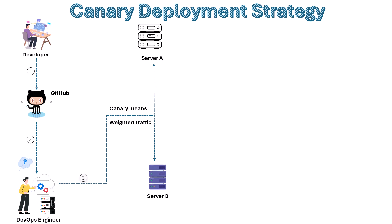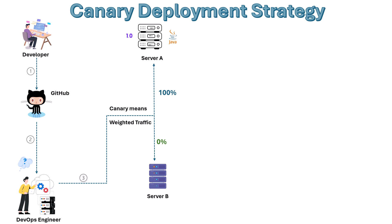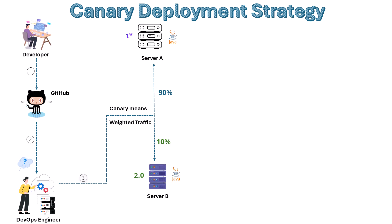In the third step, you can see that canary means weighted traffic. There are two servers — server A and server B. Server A is having a Java application with version 1.0 which is running, and it is receiving 100% of the traffic. But server B initially has no application on top of it, so it is receiving 0% traffic. The DevOps engineer has deployed another version of the Java application, which is 2.0, on server B, and initially he is setting up the weighted traffic to 10% on server B.